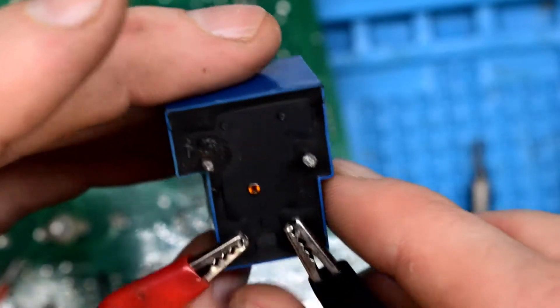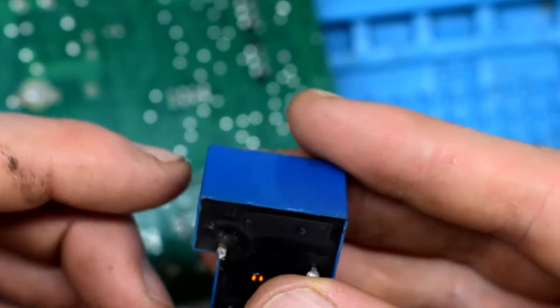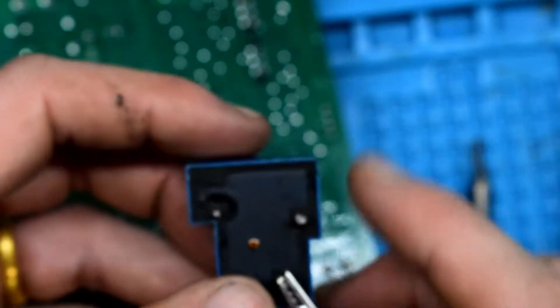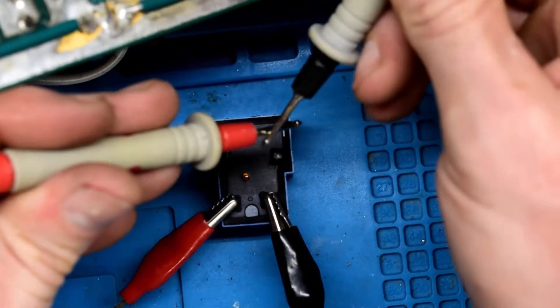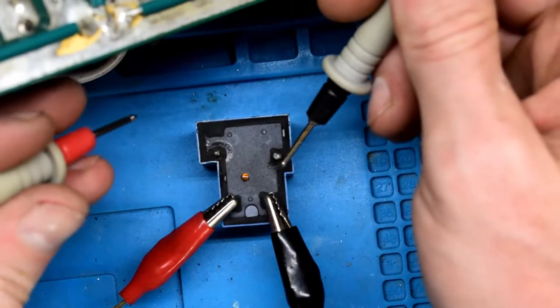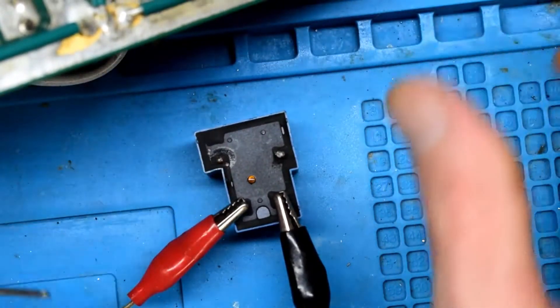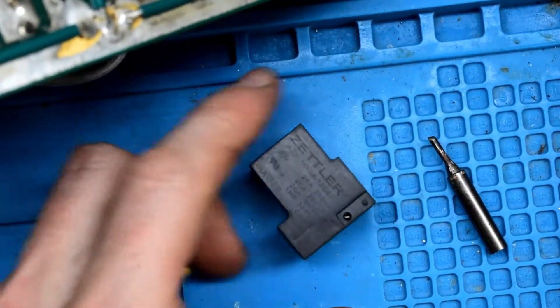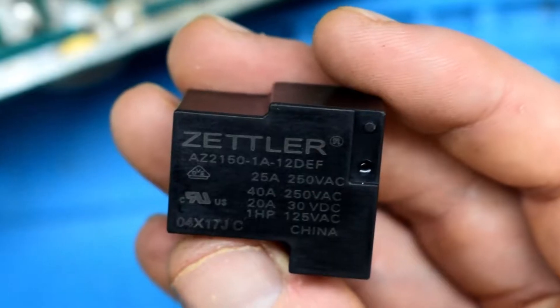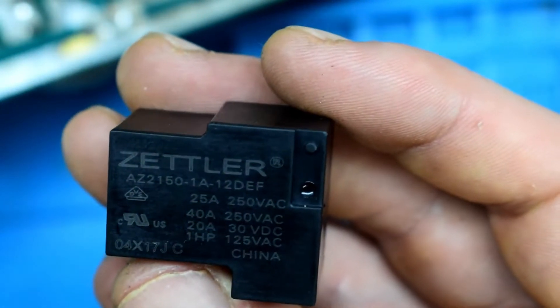This relay, you can see I've connected here but it's not connecting. This is measuring the continuity and we're getting nothing, so it's definitely a bad relay. We have a replacement relay, Zettler 25 amp 250 volts AC.